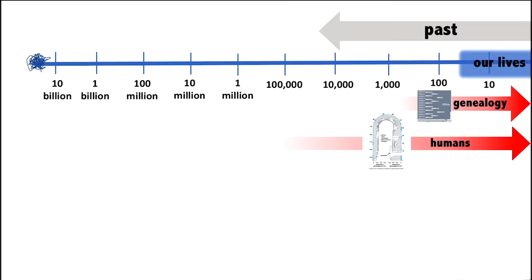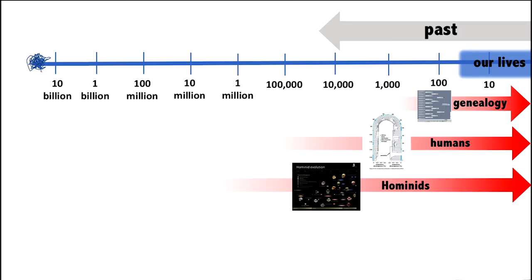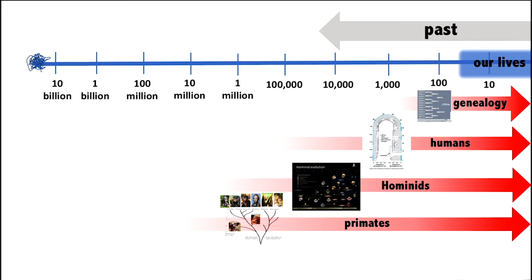But we also are connected to our hominid ancestors. We talked about that. They go back about two million years. And then we're also primates. Primates have their origin about twenty or thirty or forty million years ago.